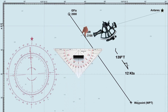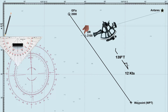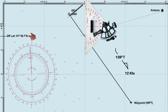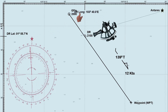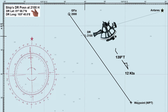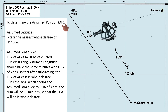The DR latitude is 01 degree 55.7 minutes north, and the DR longitude is 103 degrees 40.0 minutes east. The next steps involve celestial navigation calculations, but I won't go into detail on that here. This video focuses specifically on how the assumed position is determined and its practical application.